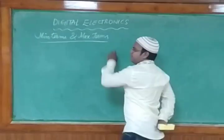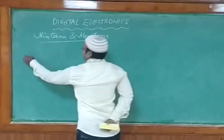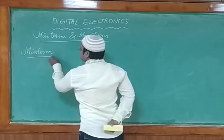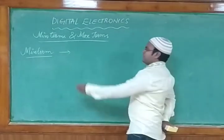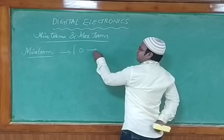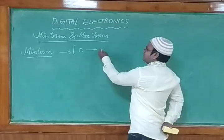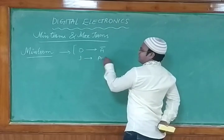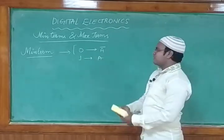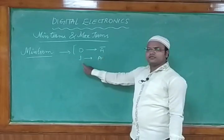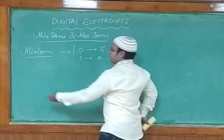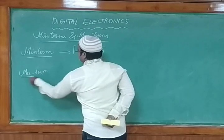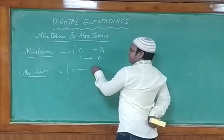In yesterday's class I explained the basic definition of minterm using a presentation. For minterm: if the bit is 0, we mention it as the complement — ā (a bar); if the bit is 1, we mention it as a. So 0 indicates the complement and 1 indicates the actual bit. For maxterm it is quite the opposite.